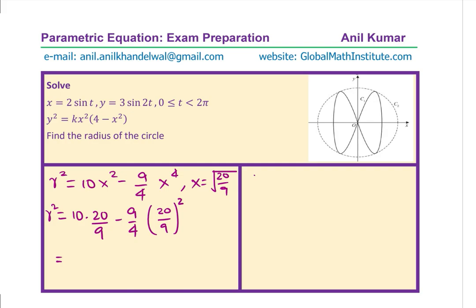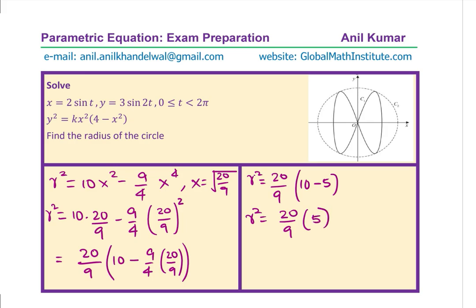Solving this, we have 20 over 9 as a common factor. And here we get 10 minus 9 over 4 times 20 over 9. That gives us r² equals to 20 over 9, 10 minus 5. Which is equal to r² equals to 20 over 9 times 5 which is 100 over 9. And r is square root of 100 over 9 and that gives you 10 over 3 as the answer.